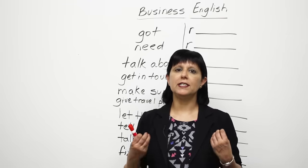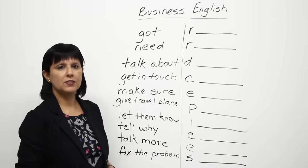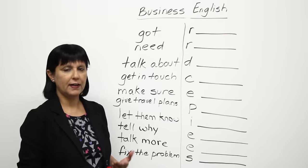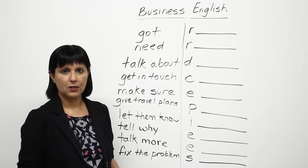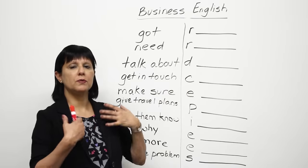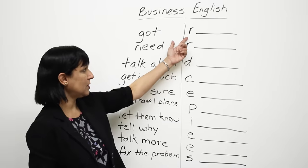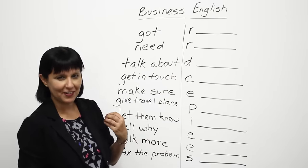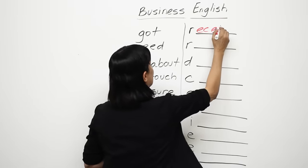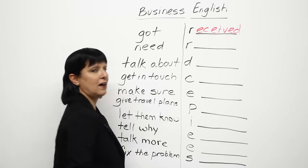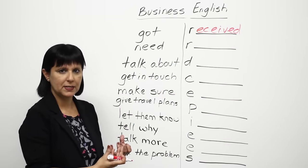Let's look at some really easy common examples. For example, if you want to say 'I got your email' — in regular English you might just say that. What would you say if you want to make it business English? The word starts with R. Instead of saying 'I got your email,' you would say 'I received your email.' Now it becomes more formal and more business-like.